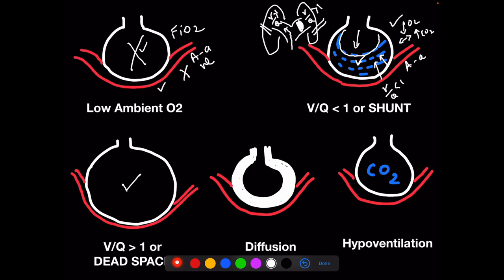Dead space is the next cause. In dead space, the capillaries and alveoli are intact but the alveoli are over-distended — they squish the capillary, so V/Q is greater than 1. This occurs in COPD, asthma, and ventilator-induced alveolar distension. It can also happen if cardiac output is severely reduced, giving a V/Q mismatch with dead space physiology. In dead space, CO2 is high, oxygen is low, and the A-a gradient is increased.